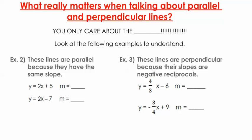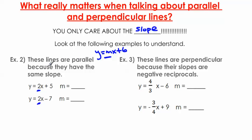When talking about parallel and perpendicular lines, you only care about the slope. In slope-intercept form — y equals mx plus b — I am only looking at the numbers next to the x. These lines are parallel because they have the same slope: I have a 2 here for slope, and a 2 here for slope. Since they're identical, the lines are parallel. The y-intercept — the plus 5 or negative 7 — doesn't matter; it just matters that they're never going to touch.